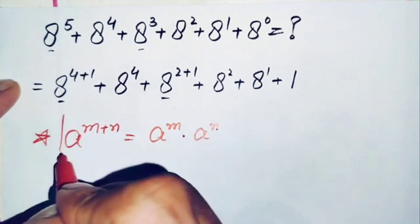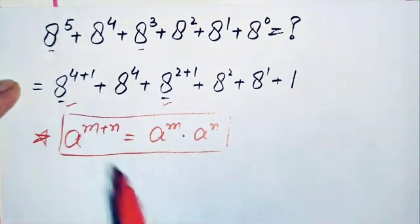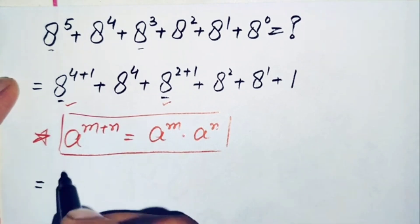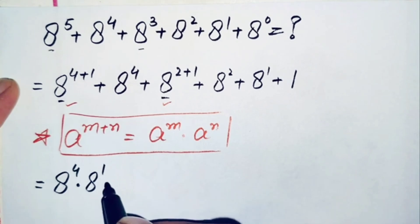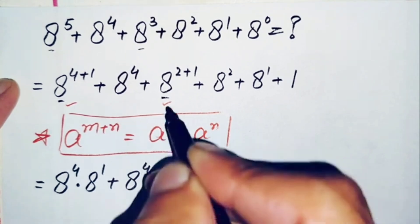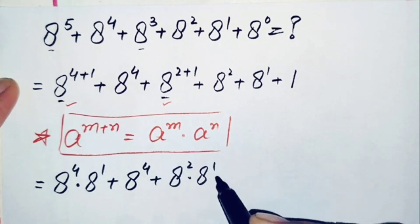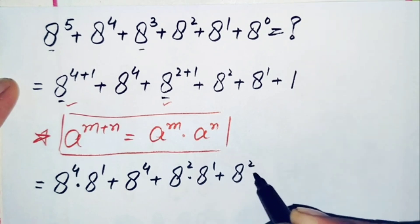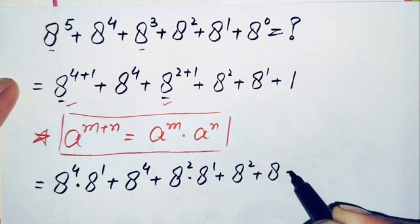Using this exponential property, the equation will become: a raised to power 4 times a raised to power 1, plus a raised to power 4, plus a raised to power 2 times a raised to power 1, plus a raised to power 2, plus a raised to power 1, plus 1.